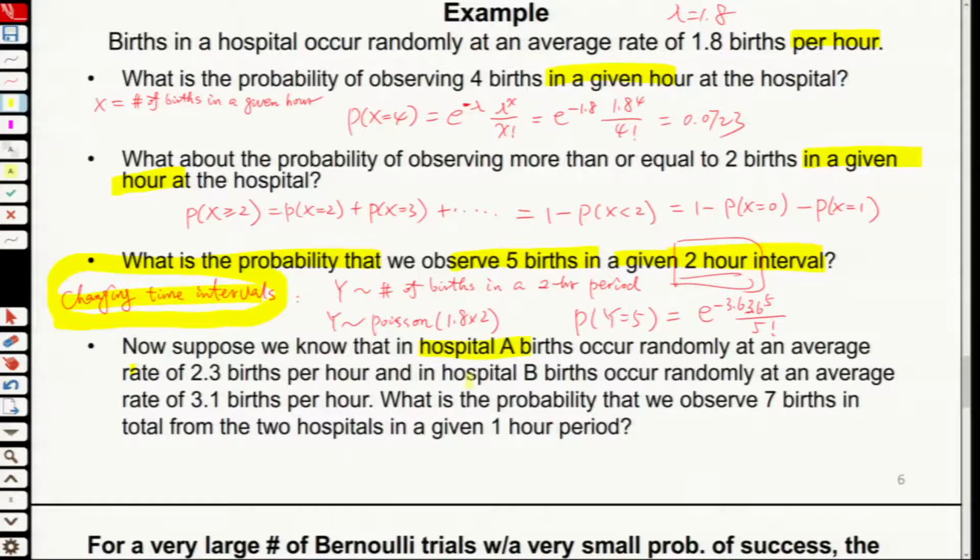Hospital A, hospital B. This rate is 2.3 per hour, this rate is 3.1. The question is, what is the probability that we observe 7 births in total from the two hospitals in a given hour?